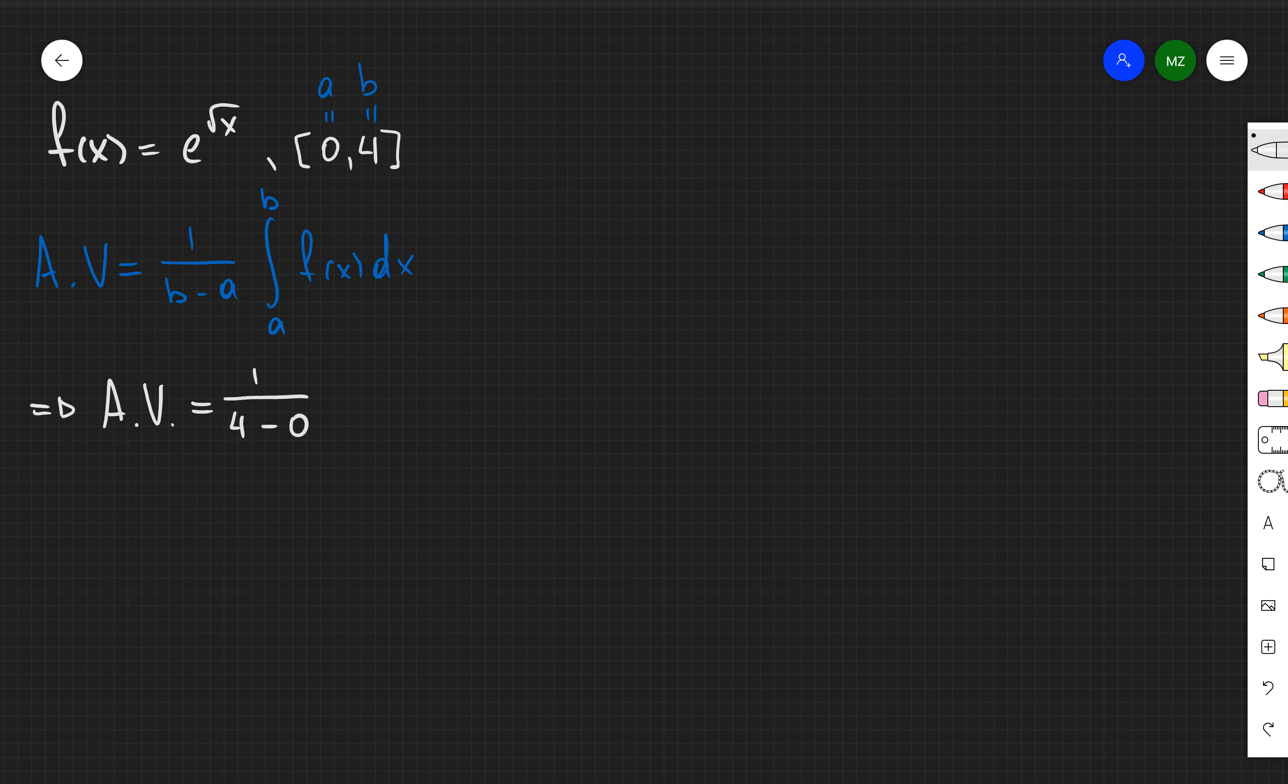So in other words, I'm going to have 1 over 4 minus 0 times the integral between 0 and 4 of e to the power of square root of x dx.